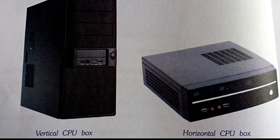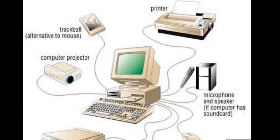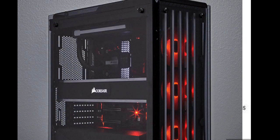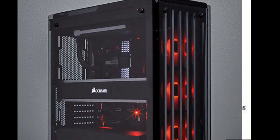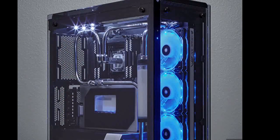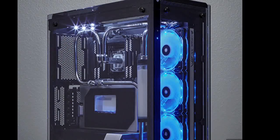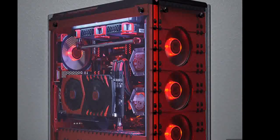The CPU is mainly classified into three parts: the first is the Control Unit, the second is the Arithmetic and Logical Unit, and the third is the Memory Unit. The vertical box next to the monitor is called the CPU box or system unit. The monitor, cable, mouse and printer are connected to the CPU box with cables. The CPU controls the entire working of the computer, so it is called the brain of the computer.